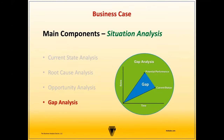Target metrics are specific and quantifiable goals or benchmarks that the project aims to achieve. They serve as clear and measurable objectives against which the project's performance is assessed. These target metrics are critical for setting expectations, tracking progress, and determining whether the project has successfully met the intended outcomes after implementation. Target metrics should be quantitative and measurable and should align with the business objectives.